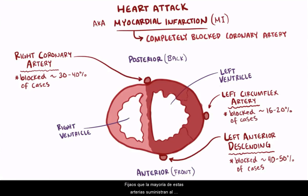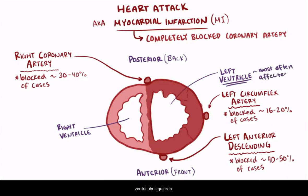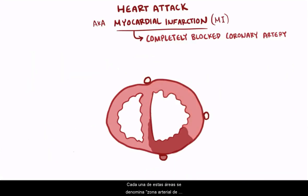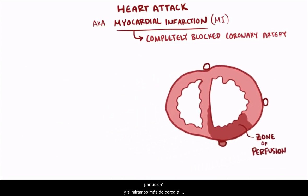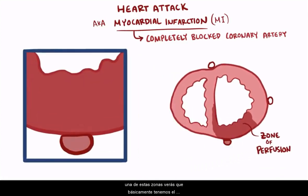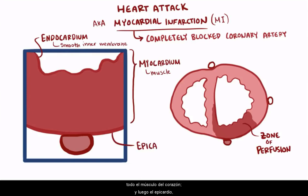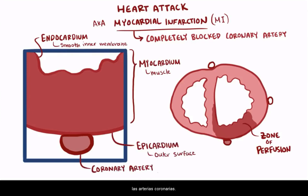Notice that the majority of these areas supply the left ventricle. Most heart attacks therefore involve the left ventricle, where the right ventricle and both atria — the upper chambers — aren't as often affected. Each of these areas is called the artery's zone of perfusion, and if we take a closer look at one of these zones, we'll see that you've got the endocardium — the smooth membrane on the inside of the heart — then the myocardium, all the heart muscle, and then the epicardium, the outer surface of the heart, which is where the coronary arteries live.